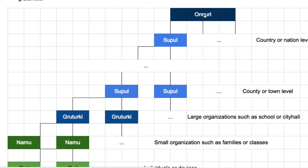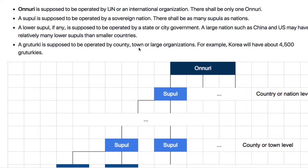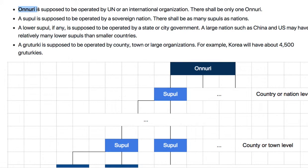Onuri is the topmost level and is supposed to be operated by the UN or an international organization, so there shall be only one Onuri in the Opnash platform. The highest Suphul is supposed to be operated by a sovereign nation such as China, Japan, or the USA, so there shall be as many highest Suphuls as there are nations.